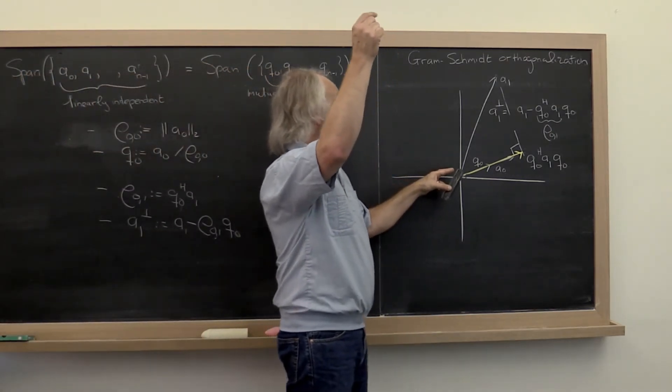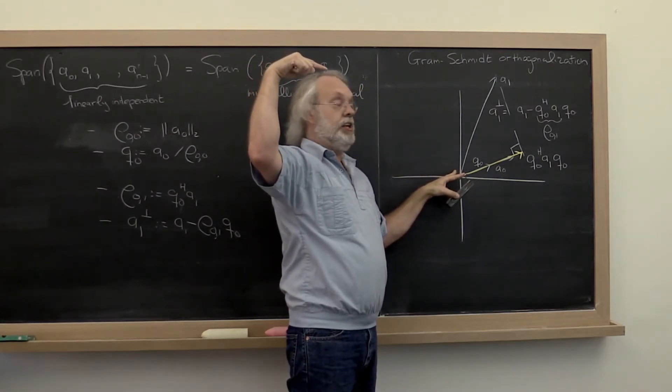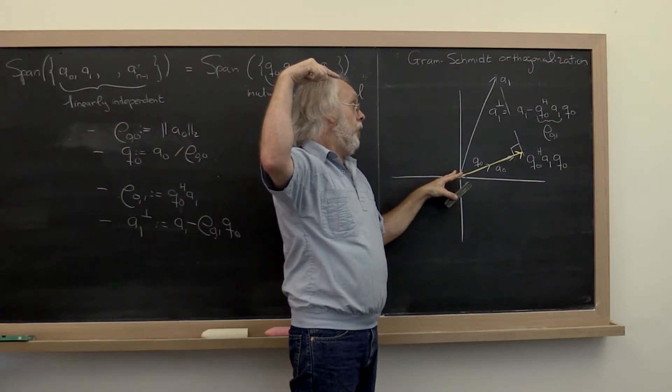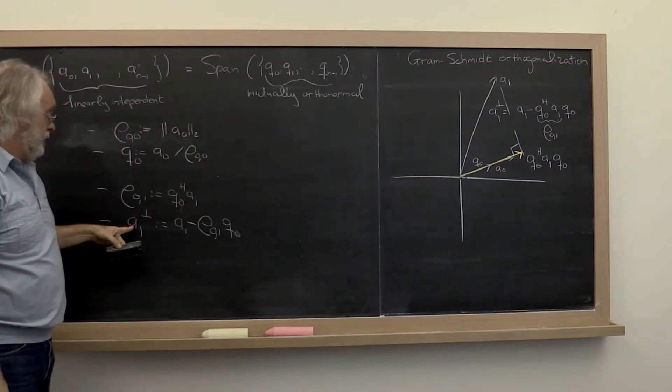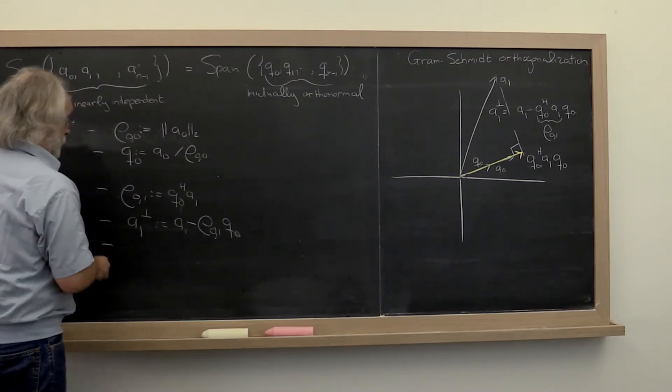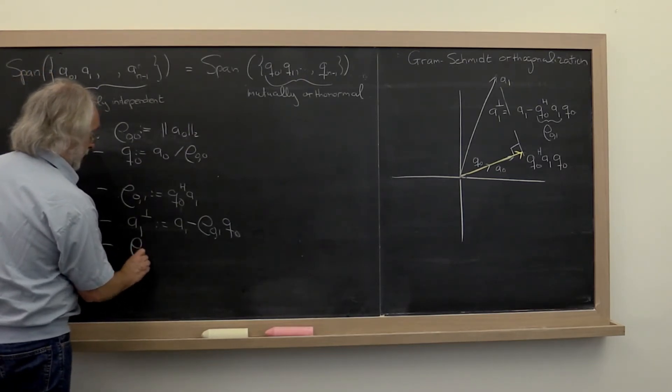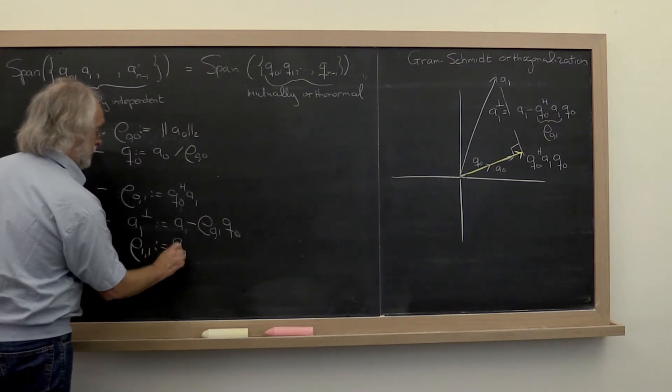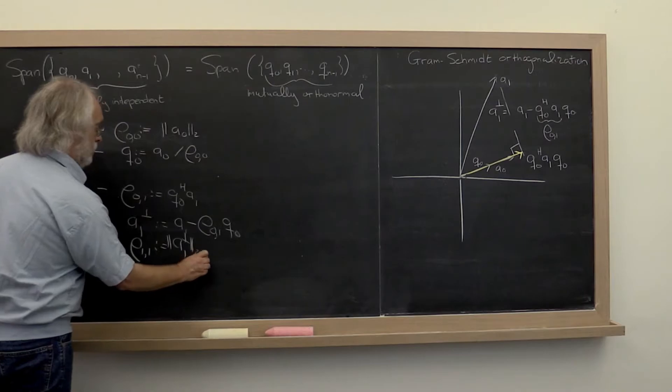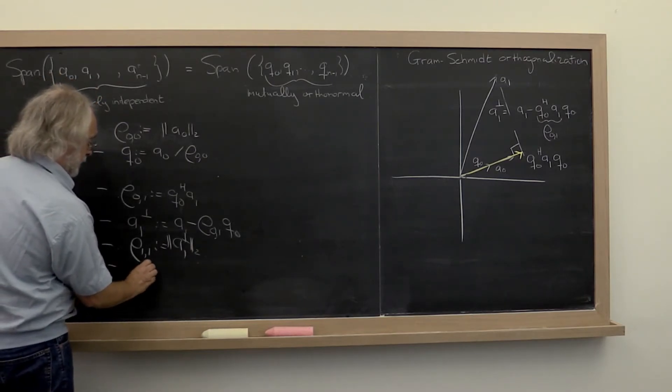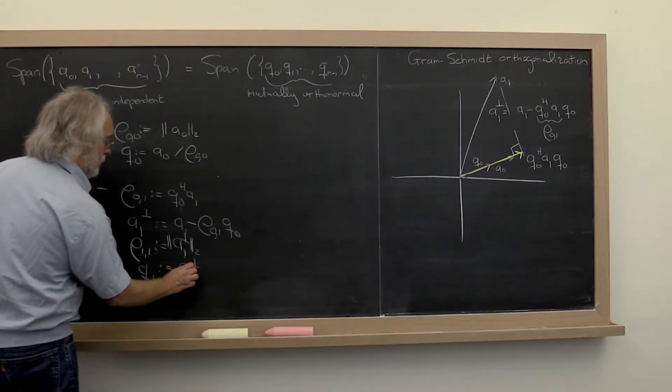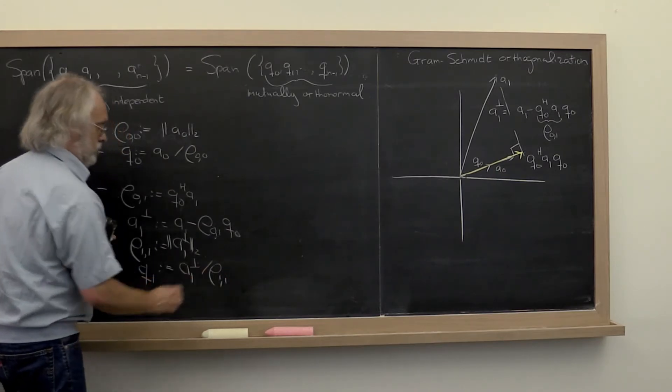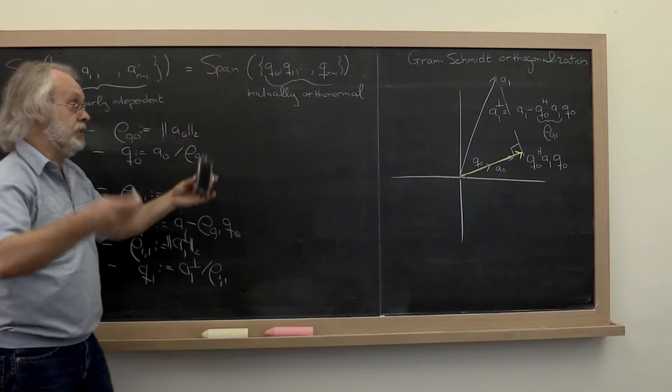Now, if we had another vector... wait a minute. That merely gives us a vector that's perpendicular. What we then want to do is say, let's compute the length of that vector. And then let's create the vector q1 to be in that same direction but of length 1. Now we're ready to move on.